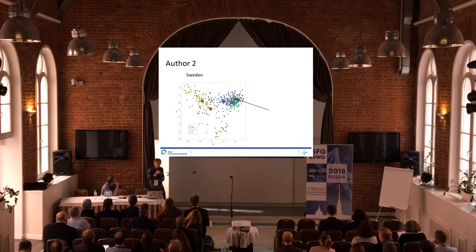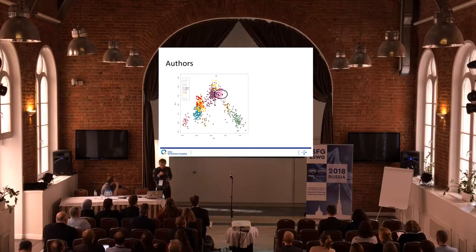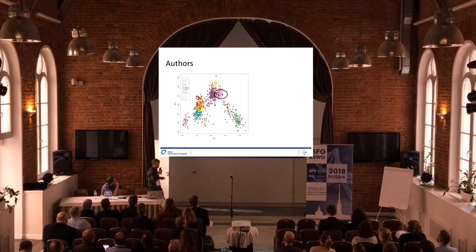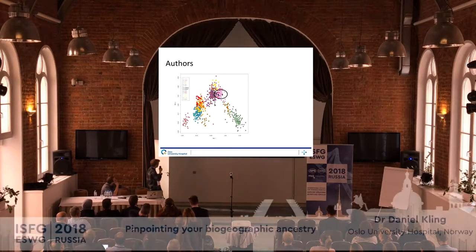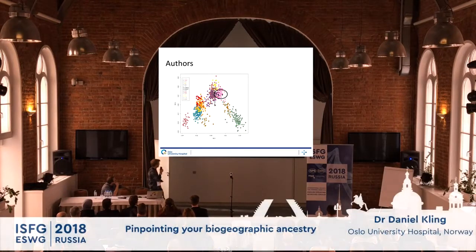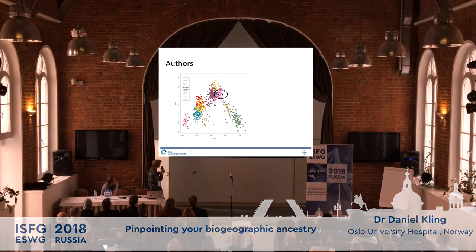Briefly as a summary, this is a plot where we plot both authors. We have Finland down here, Sweden, UK, kind of the Mediterranean, Italy, Spain, and Sardinia. We see that both authors fit nicely with Swedes, and also close to the UK population.